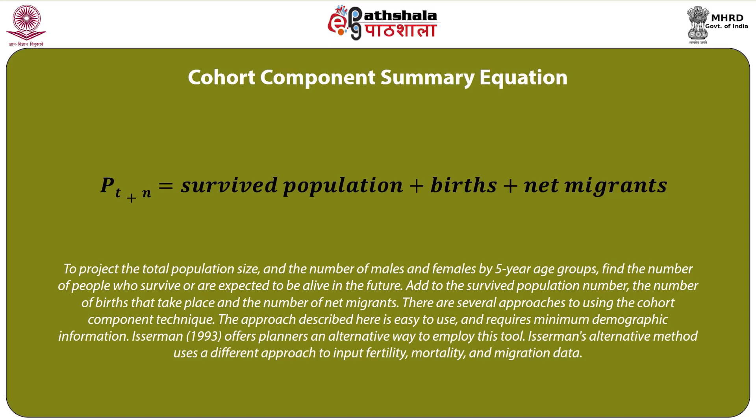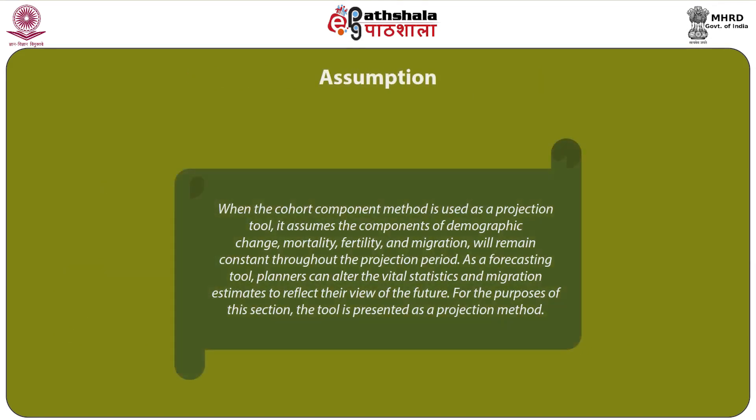To project total population size and the number of males and females by 5-year age groups, we need to find the number of people who survive or are expected to be alive in the future, and then add the survived population number, the number of births that took place, and the number of net migrants. There are several approaches for using the cohort component technique. The approach described here is easy to use and requires minimum demographic information. Azureman (1993) offers planners an alternative way to employ this tool using a different approach to inputs of fertility, mortality, and migration data.